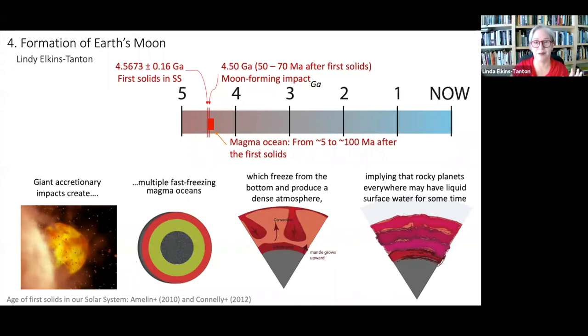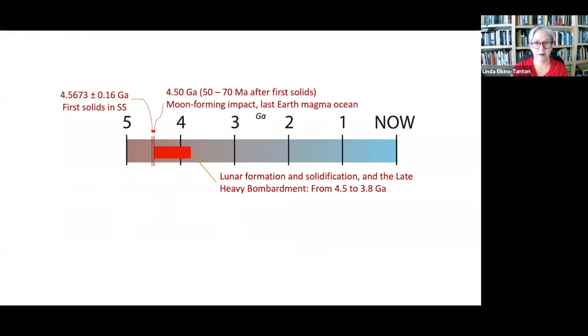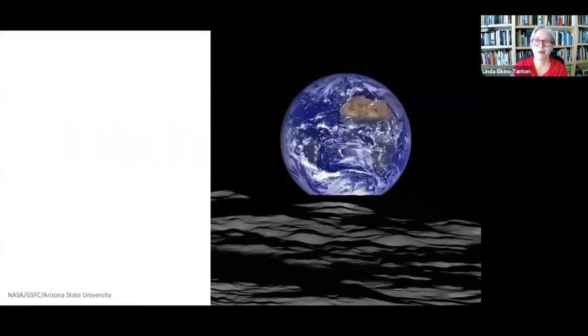This implies that rocky planets everywhere may have liquid surface water for some period of time, may be habitable. For this lecture I'm going to talk about the formation of Earth's moon immediately following the moon-forming impact around 4.5 billion years ago. Here's today's timeline - we're going to follow the formation of the moon through solidification, volcanic activity, and the big impacts of the late heavy bombardment, taking us up to about 3.8 billion years ago.